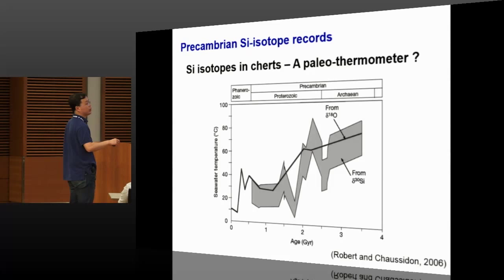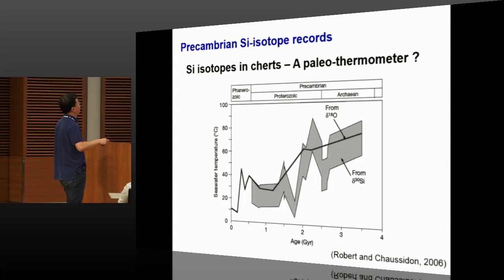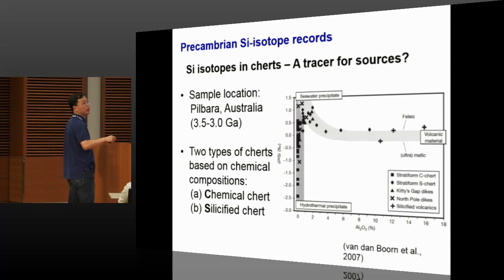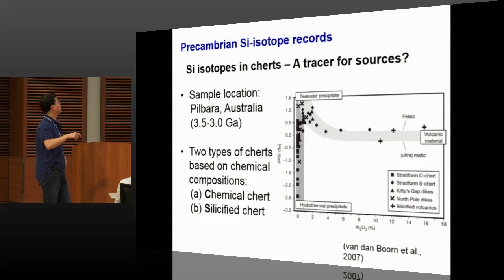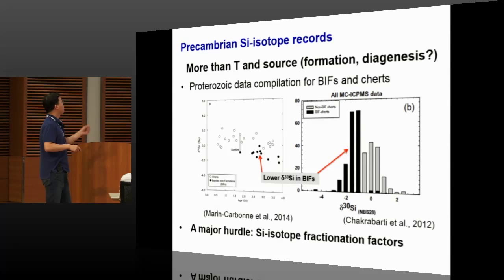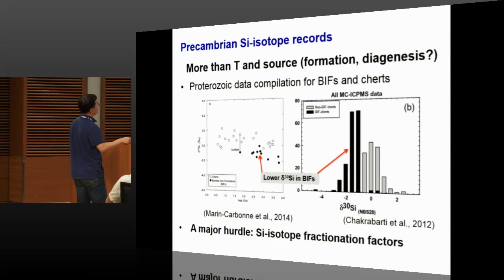That proposal was challenged by some later studies. This group basically looked at the silicon isotope in the chert against their chemical composition — alumina oxide in this case. The data sets seem to be explained by three different end members, so these researchers proposed silicon isotope in the chert can be used to trace silica from different sources. There are other processes that may also affect silicon isotope preserved in these geological records. These figures show a compilation of silicon isotope composition in the Proterozoic banded iron formation chert, where the delta silicon 30 value in the banded iron formation seems lower than the data recorded by the chert even at the same time.